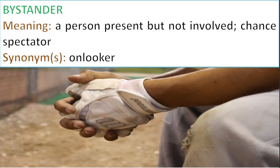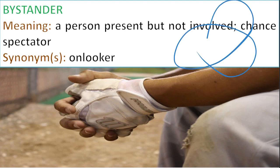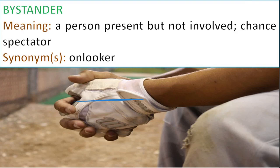Next, bystander — very simple. As the name suggests, they stand by and watch whatever is happening, not participating or getting involved in it. So you're just a chance spectator. You will often hear: that person was just an innocent bystander. An onlooker is a bystander.